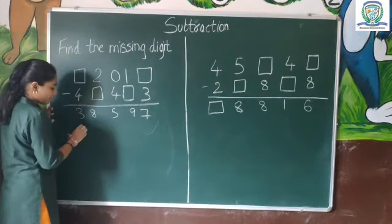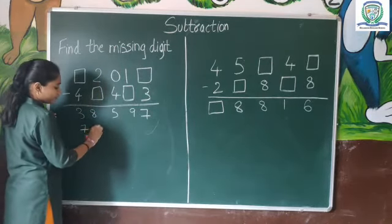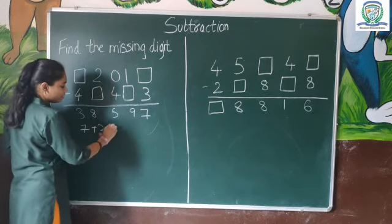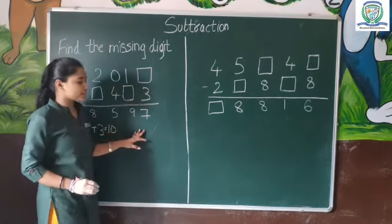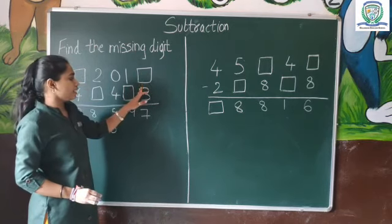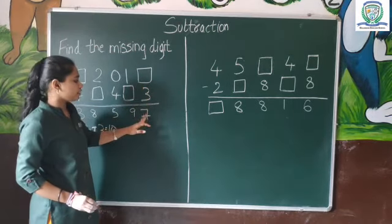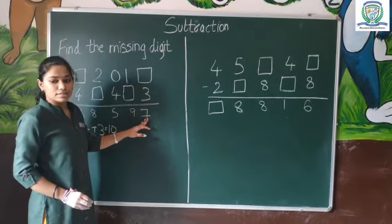So you will add 7 plus 3. You will find the number you have to check: 10 minus 3. So 10 minus 3 gives you 7.